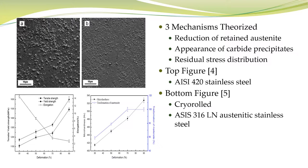The bottom figure shows results of an austenitic stainless steel that was cryo-rolled, and this explains the first mechanism: reduction of retained austenite. All materials that undergo cryogenic treatments go through the martensitic transformation where retained austenite is still present after the transformation. A reduction of this retained austenite increases the yield strength and tensile strength of the material.